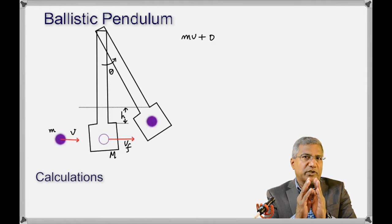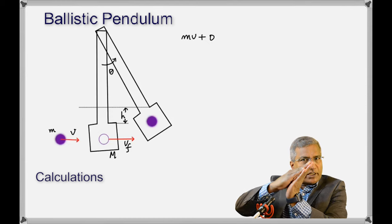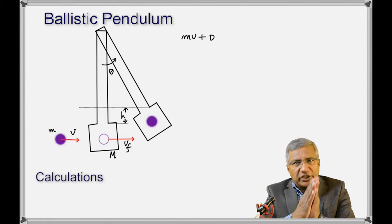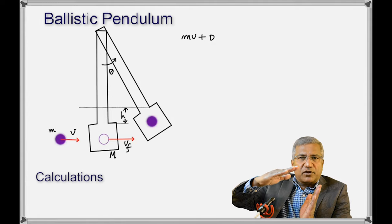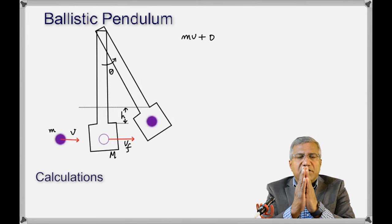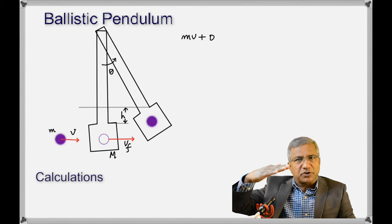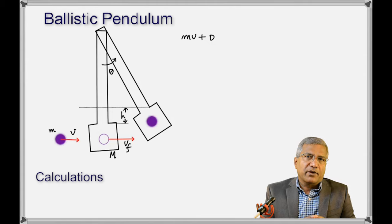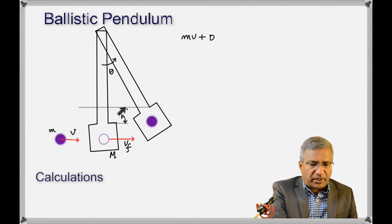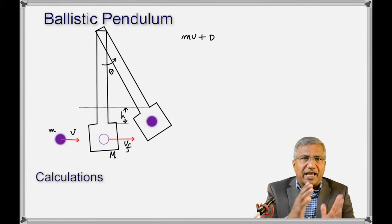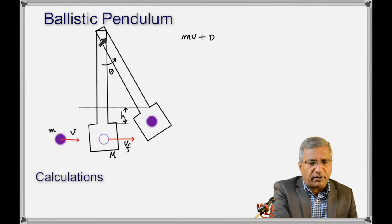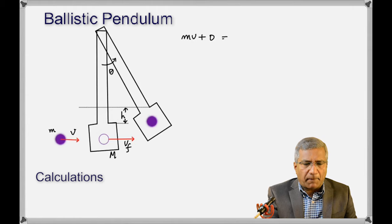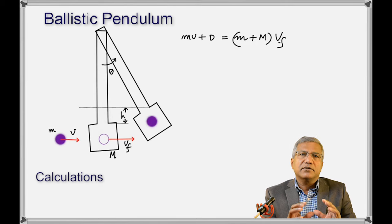V sub f is an important quantity — it's the velocity with which the pendulum and the ball together begin their upward swing. After the ball gets stuck in the pendulum they together have an initial velocity v_f, then the final velocity becomes zero at the top. Whatever kinetic energy they both had at the bottom is transformed into potential energy. We're going to use conservation of energy and conservation of momentum. The height h through which the pendulum swung can be calculated from angle theta using trigonometry in this right-angle triangle.